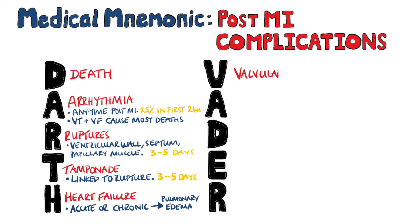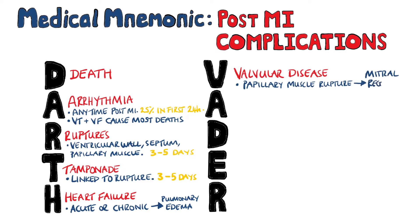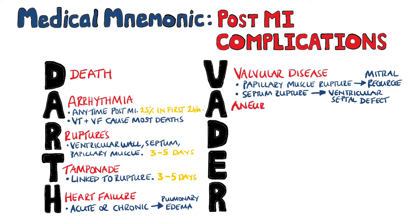V is for valvular disease. We touched on papillary muscle ruptures that can lead to acute mitral regurgitation, but you can also end up with ventricular septal defects due to septum ruptures. Our second A is for aneurysm, usually of the left ventricle — up to 15% of patients post-MI will develop one, and some can develop very quickly within five days.